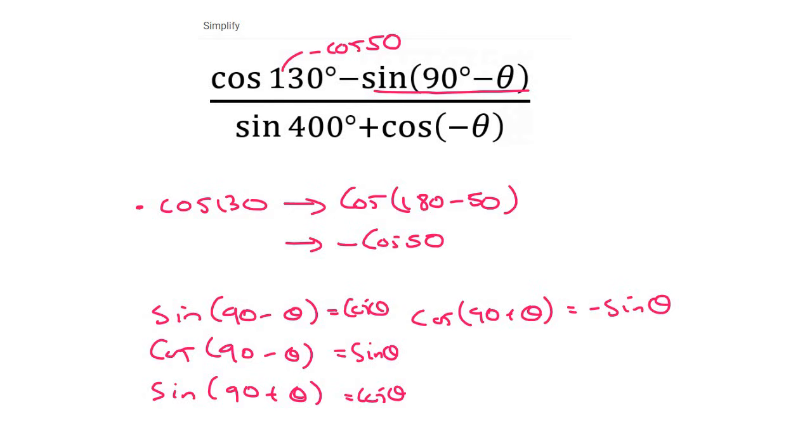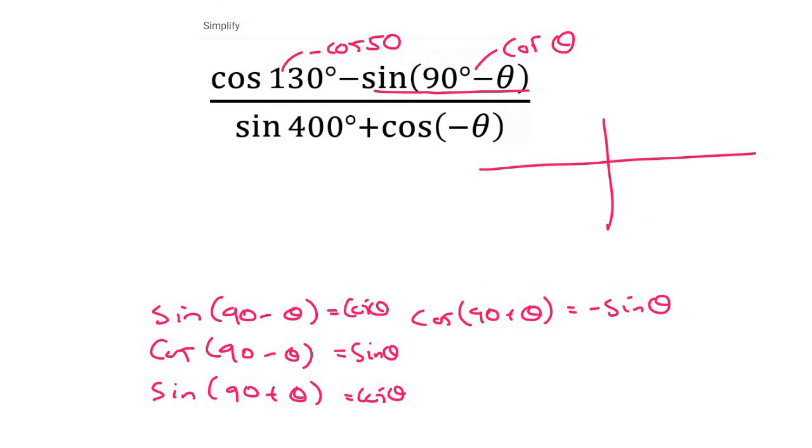So here's sin 90 minus theta. Look at that, cos theta. So that one just becomes cos theta. Now sin of 400. 400 is too big for this CAST diagram. So what you do is you minus 360. You're allowed to do that. Because if you minus 360, you're still going to be there. You're not changing the position. So sin 400 is the same as sin 40, because we minused 360. And sin 40 is already reduced. So we don't have to do anything there. That's just sin 40.